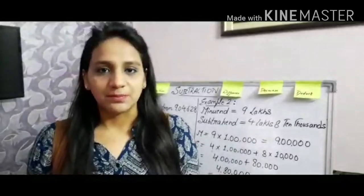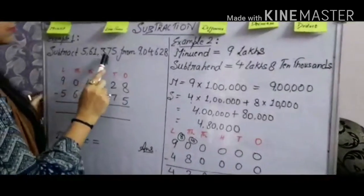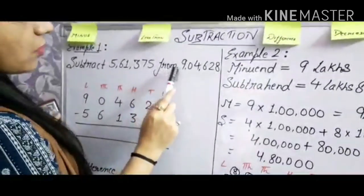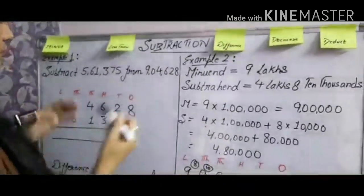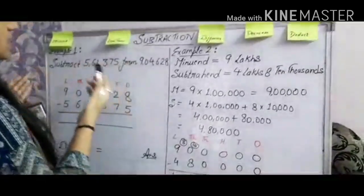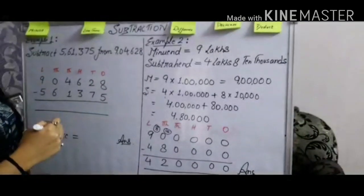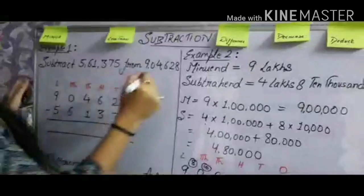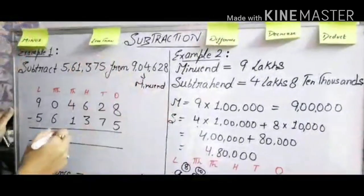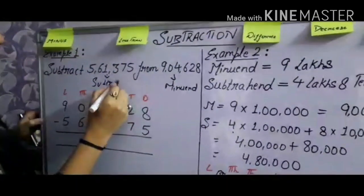Let me show you with some examples. Here it is written: subtract 5,61,375 from 9,04,628. But before that you have to find which number is minuend and which number is subtrahend. Minuend is always the number from which we subtract the other number — minuend is always bigger. So 9,04,628 is the minuend, and 5,61,375 is the subtrahend.